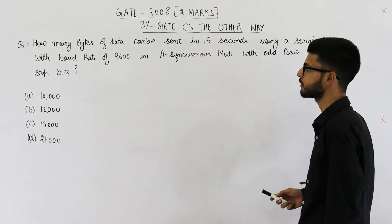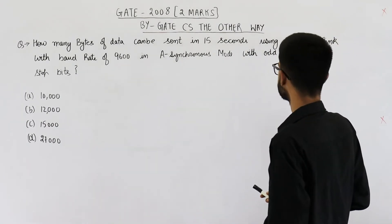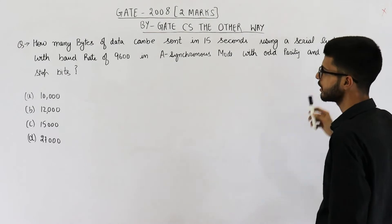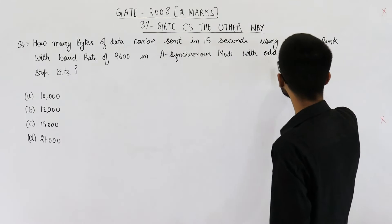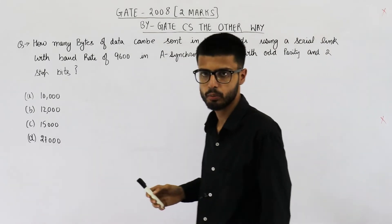They're saying how many bytes of data can be sent in 15 seconds using a serial link with baud rate of 9600 in asynchronous mode with odd parity and two stop bits.